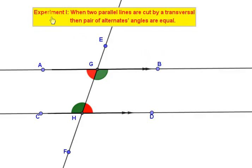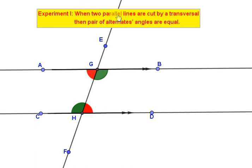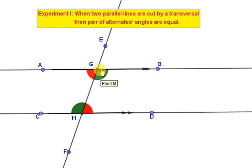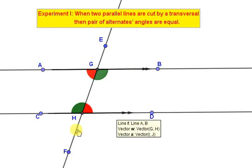You can see on the board on the screen: when two parallel lines are cut by a transversal, then pairs of alternate angles are equal. For this, I drew two straight lines — two parallel lines AB and CD. These two parallel lines are intersected by a transversal EF at points G and H. AB and CD are parallel lines.